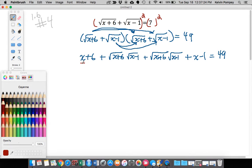I have a couple of like terms here. I have an x and an x, a 6 and a minus 1. When I combine those together I'm going to have 2x plus 5, and these things right here are two like terms as well. So I have 2 times square root of (x+6) times square root of (x-1), and my right hand side is still that 49.